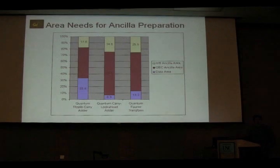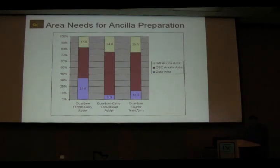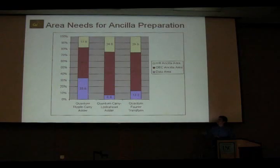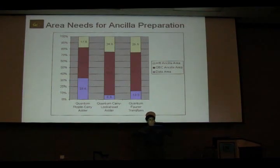Putting it all together, we took three quantum circuits — a ripple carry adder, a carry look-ahead adder, and a Fourier transform, all 32-bit versions encoded in the 7-1-3 code — and computed what would be necessary to run at the speed of data. The bottom set of boxes is the percentage of layout area dedicated to data; the middle set is the area dedicated to zero ancilla factories for QEC; and the top set is non-transversal ancilla factories. We see that ancilla generation dominates the layout — for the more parallel carry look-ahead adder, over 93% of the layout is supporting the data doing the computation.